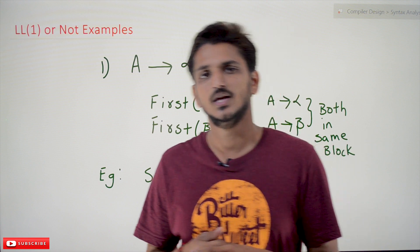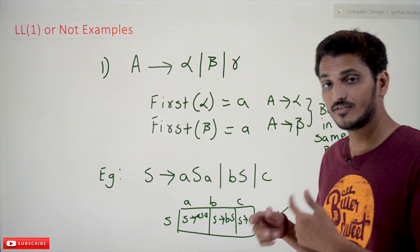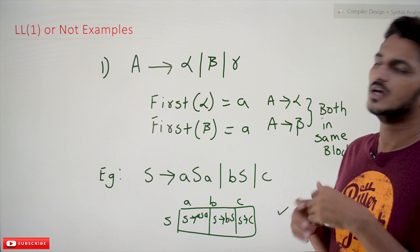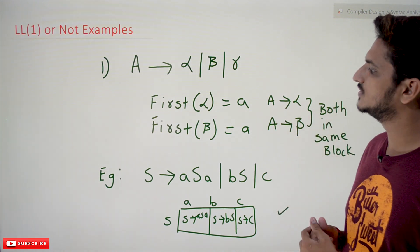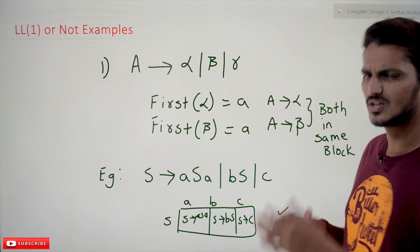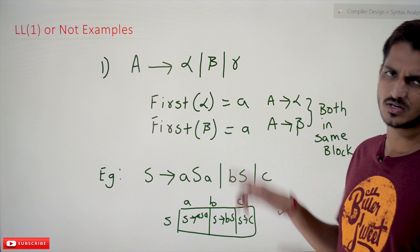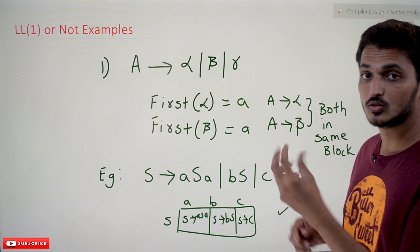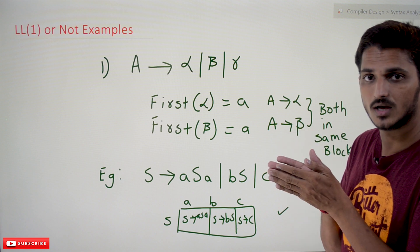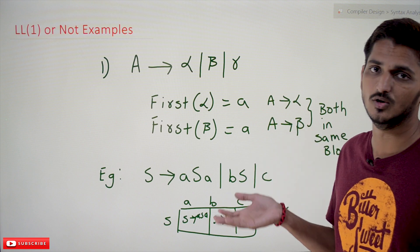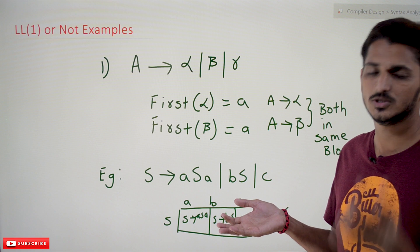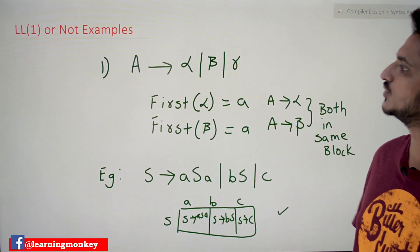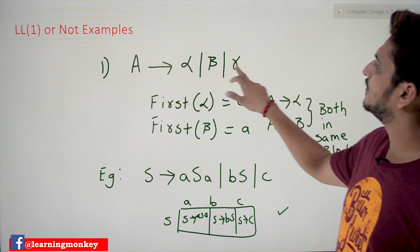This is a quick way to identify whether the given grammar is LL1 or not. What are the situations we have to consider? Otherwise we have to construct the complete table and check whether there are two productions in the same block — that is a failure case, which we already discussed previously.